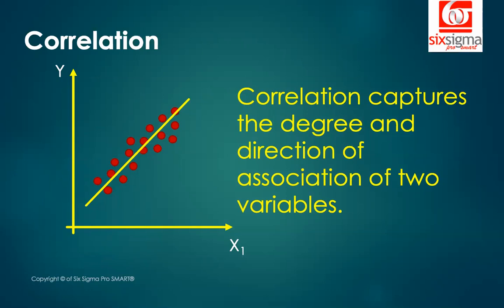Whereas in cases where x increases but y decreases as a result, it's called a negative correlation. Correlation will always be between minus one and plus one. The closer to one it is, the stronger is the magnitude or the strength of the relationship between the two variables.